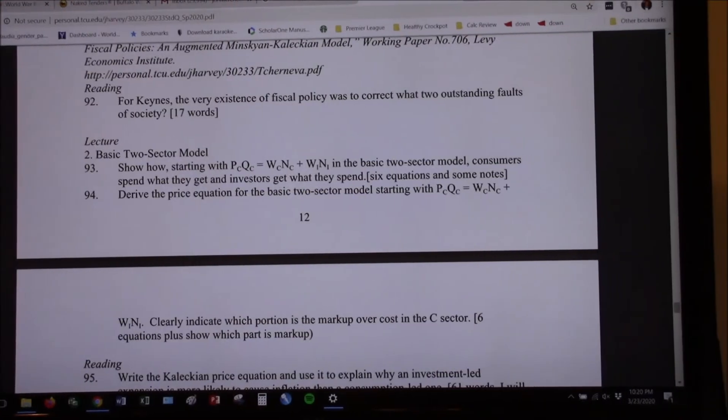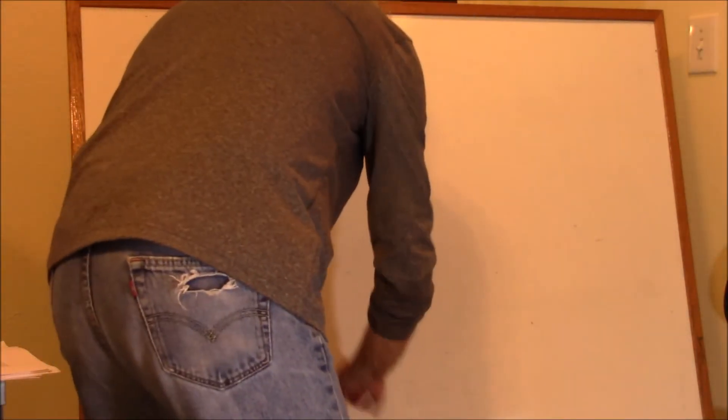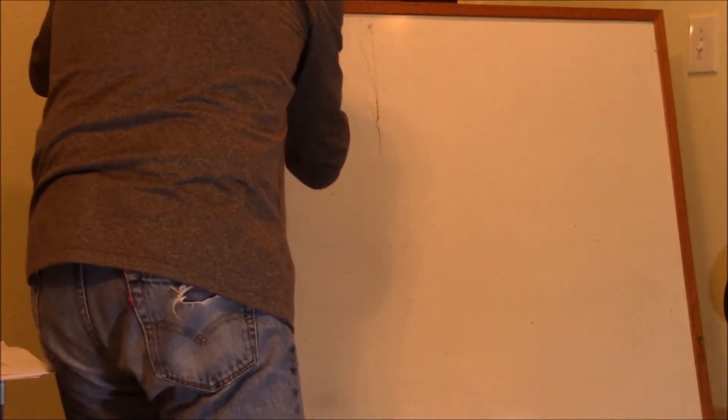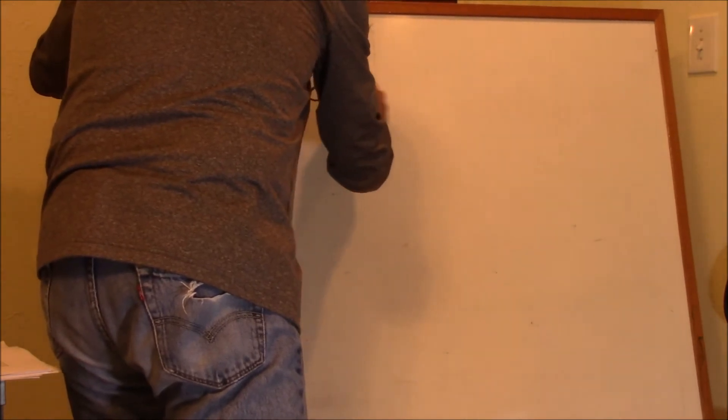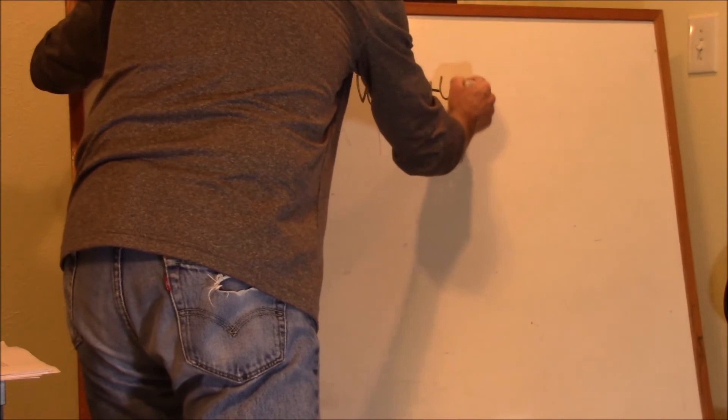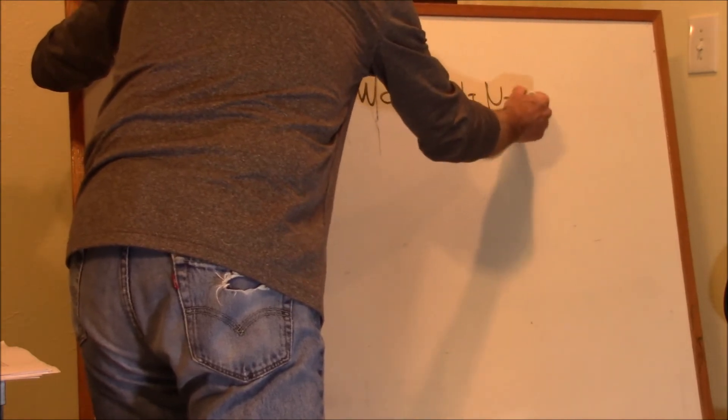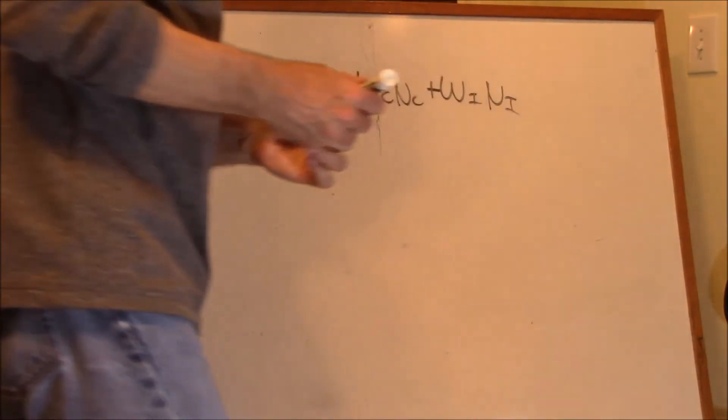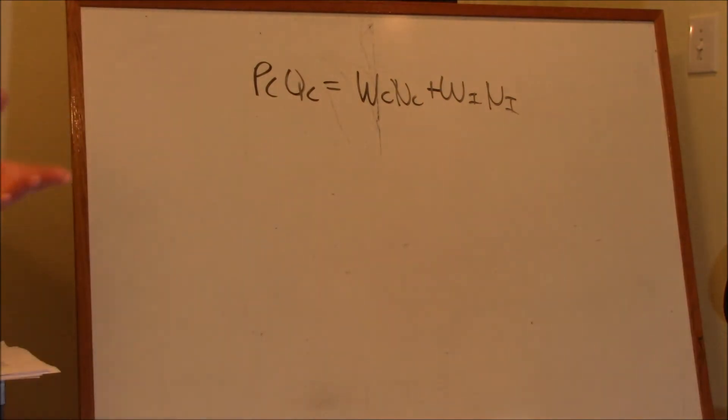All right. So let's derive this equation. I'm going to derive this markup from what Kalecki already gave and start with the same thing. PCQC equals WCNC plus WINI. And look at it. First of all, think about this. Well, we're trying to figure out what the price level is. Well, there it is. PC.